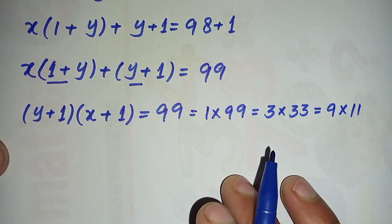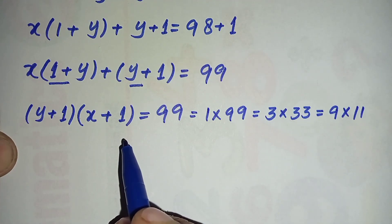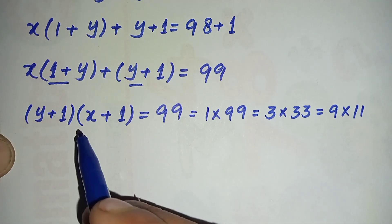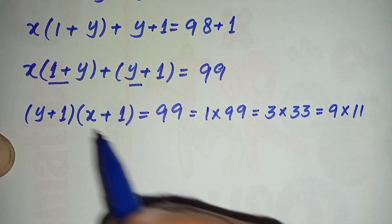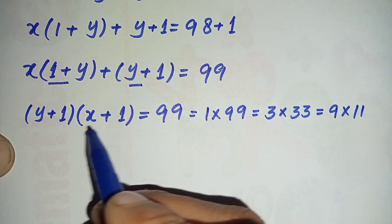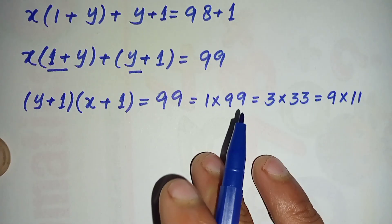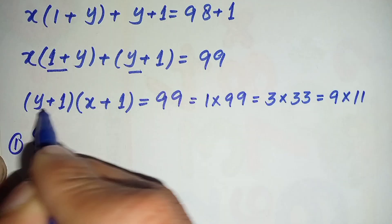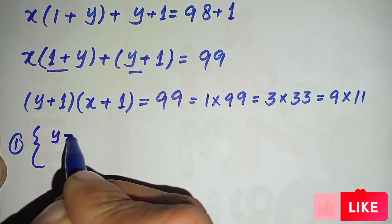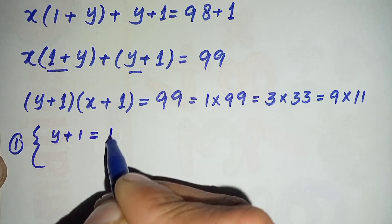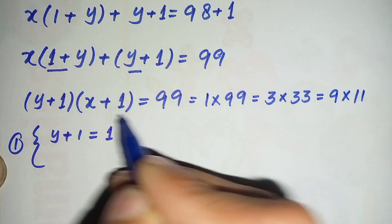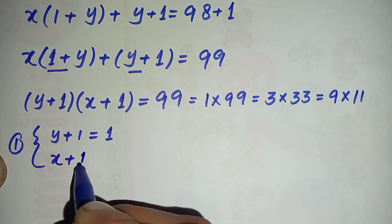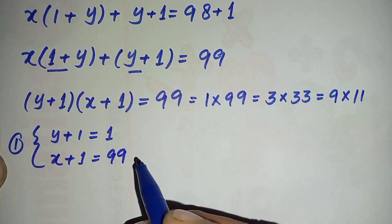For each pair we will compare (y + 1) and (x + 1) with the factor pairs. For the first pair, we compare (y + 1) = 1 and (x + 1) = 99.